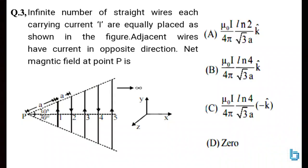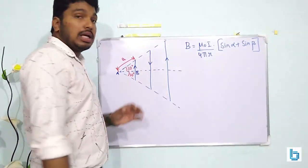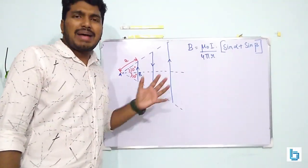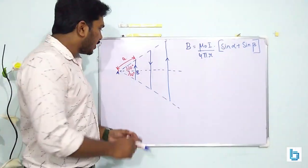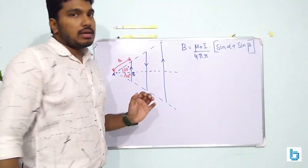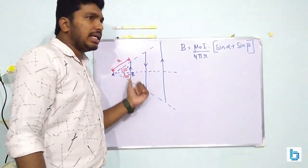An infinite number of straight wires, each carrying current I, are equally spaced as shown in the figure. Adjacent wires have currents in opposite directions. Find the net magnetic field at point P. This is a question from the chapter Moving Charges and Magnetism. There are infinite parallel wires at equal distances — it goes on like that, not just three.